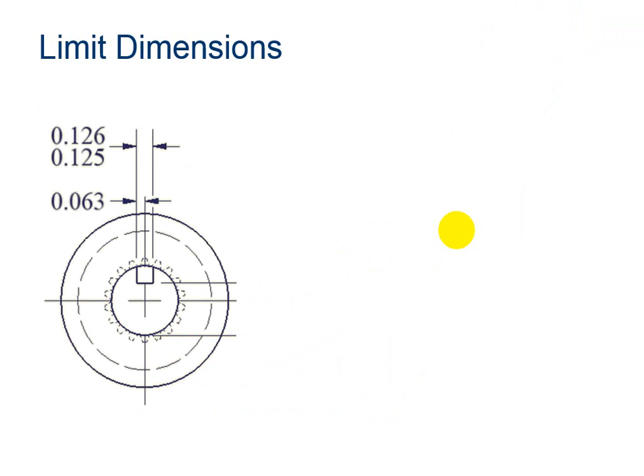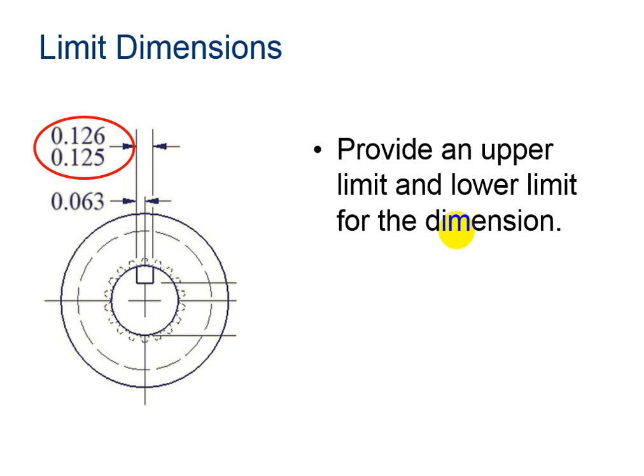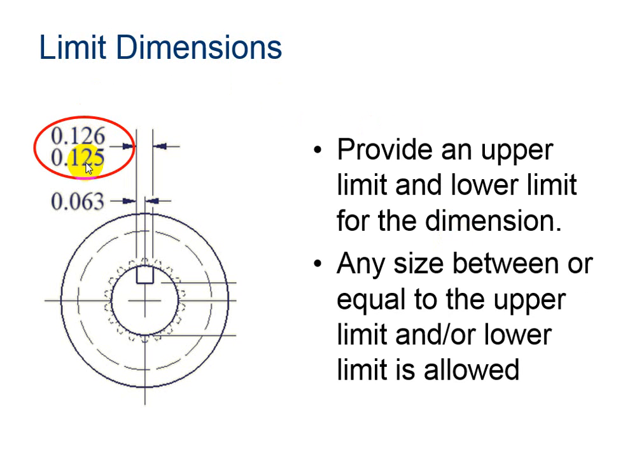Here's an example of limit dimensions. I know that it's a limit dimension because it provides an upper limit and a lower limit for the dimension. Any size in between these two decimals is acceptable for the part and it will still function correctly. However, should my part measure .127, we would not be able to use it.